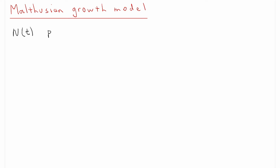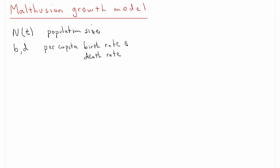In the Malthusian growth model, we're modeling the growth of a population in time due to births and deaths. Our independent variable is time. Our dependent variable will be the population size — we'll call that n of t, so that will be the population size at time t. The parameters will be the birth rate and the death rate, b and d. These are the per capita birth rate and death rate. Per capita means it's the average births or deaths per individual in the population, and the rate means it's per unit time.